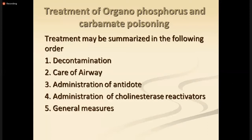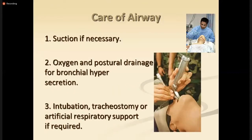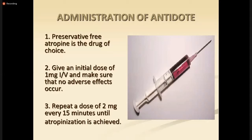General measures include suctioning with the foot end of the bed raised for proper drainage, postural drainage, and oxygen for bronchial hypersecretion. Intubation or tracheostomy with artificial respiratory support may be required. The mainstay of treatment is securing the airway. The specific antidote is preservative-free atropine — the drug of choice. Initial dose is 2 to 4 mg IV or IM, given every 10 to 15 minutes until atropinization is achieved.